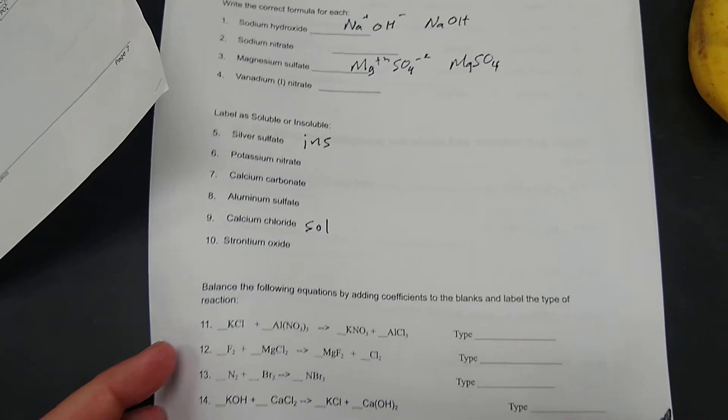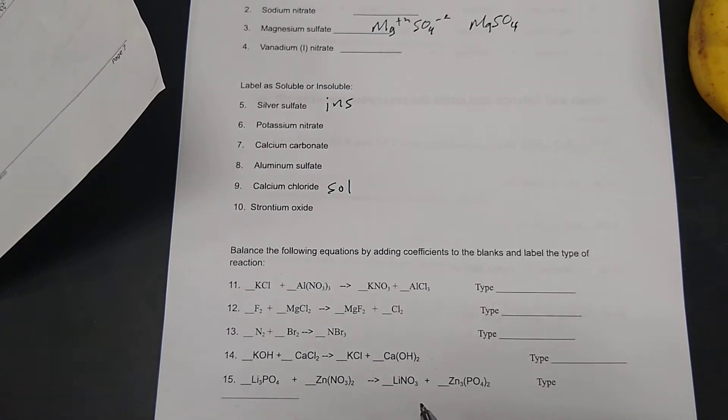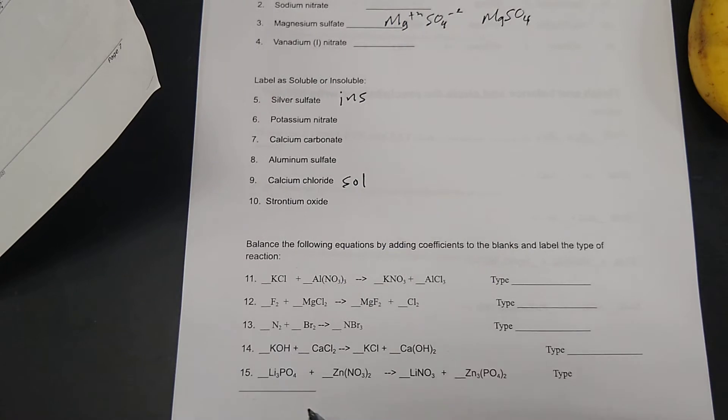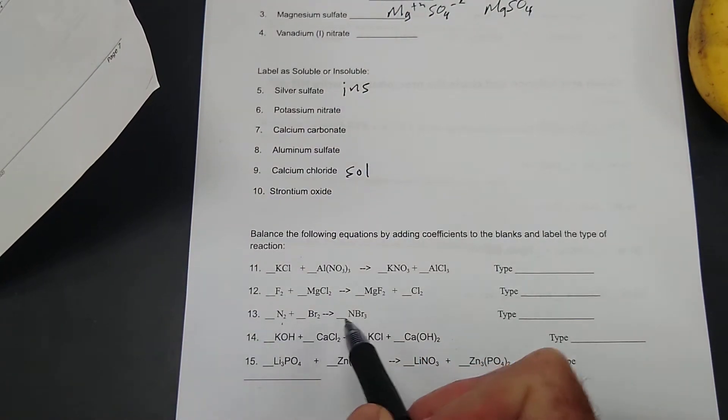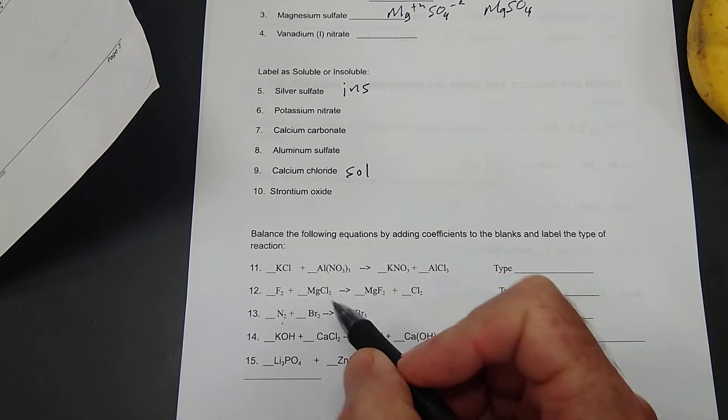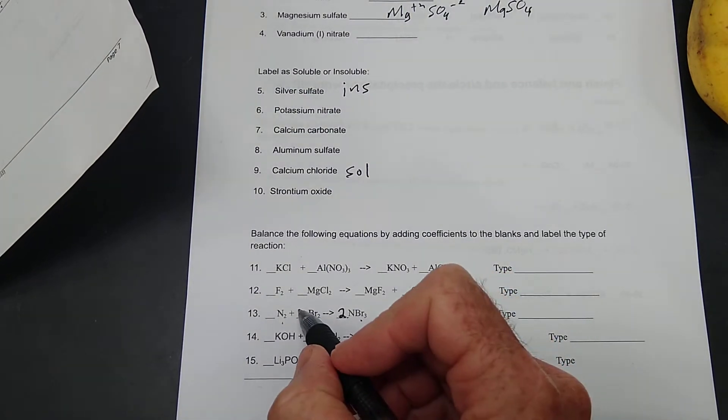Balance the following equation by adding coefficients to the blanks. Let's try number 13. I've got two nitrogens and one nitrogen. They had two there. That gave me six bromines, two times three. So I'm going to put a three there.